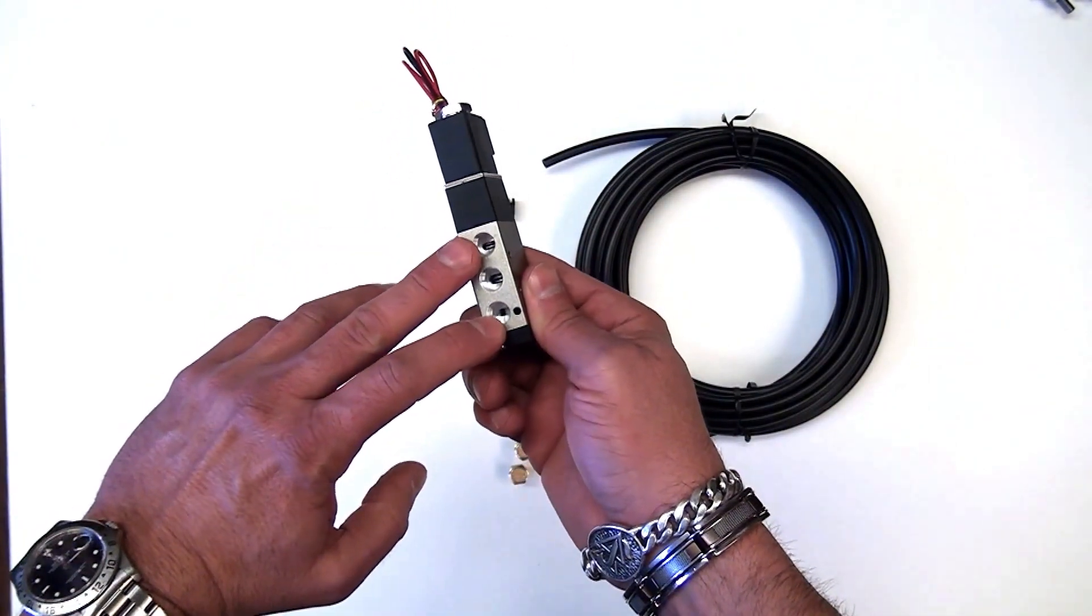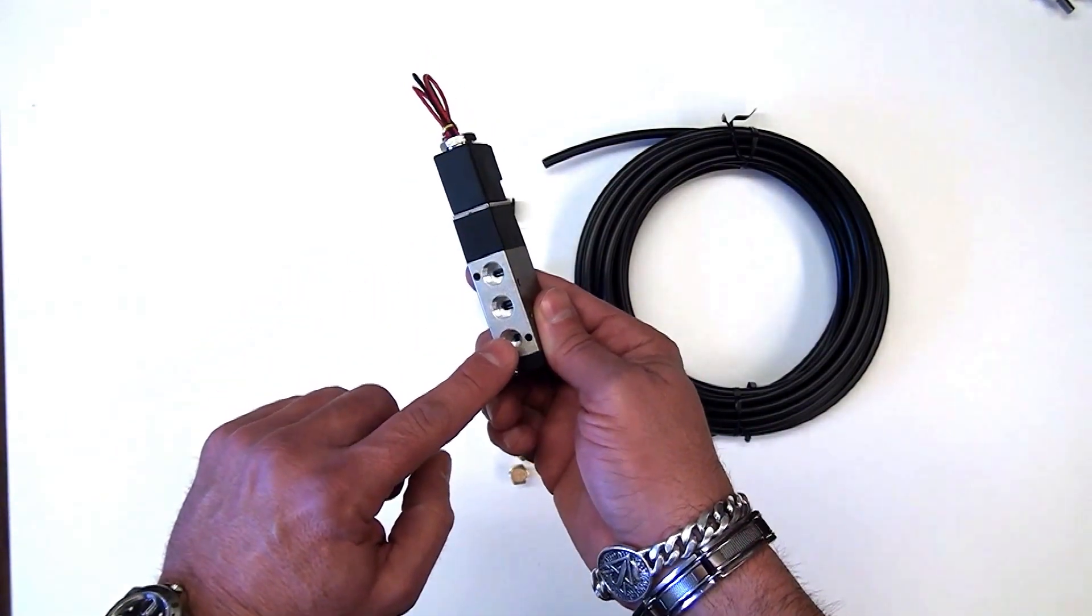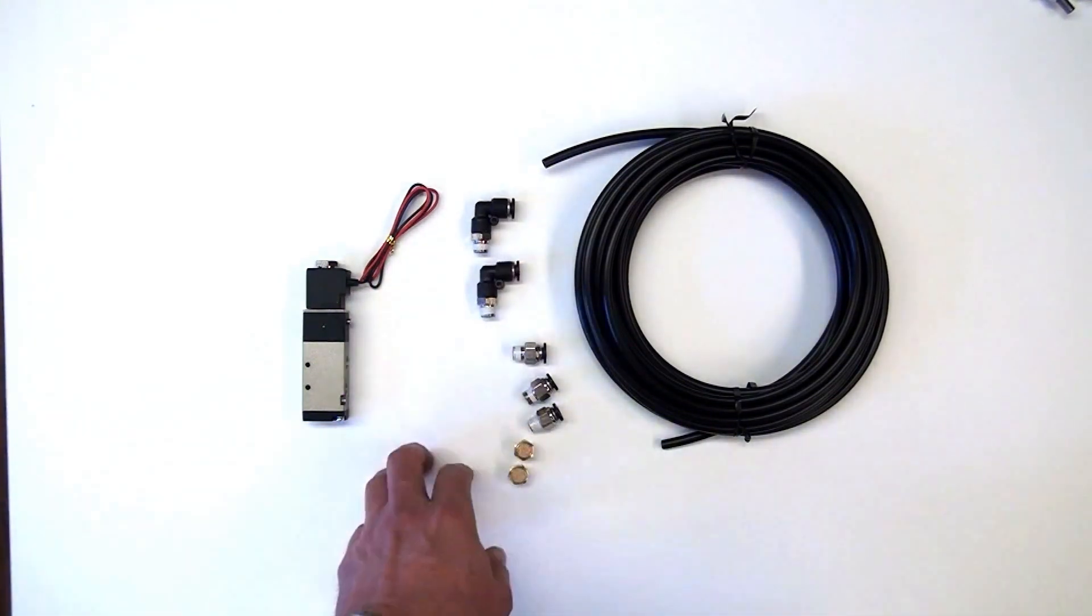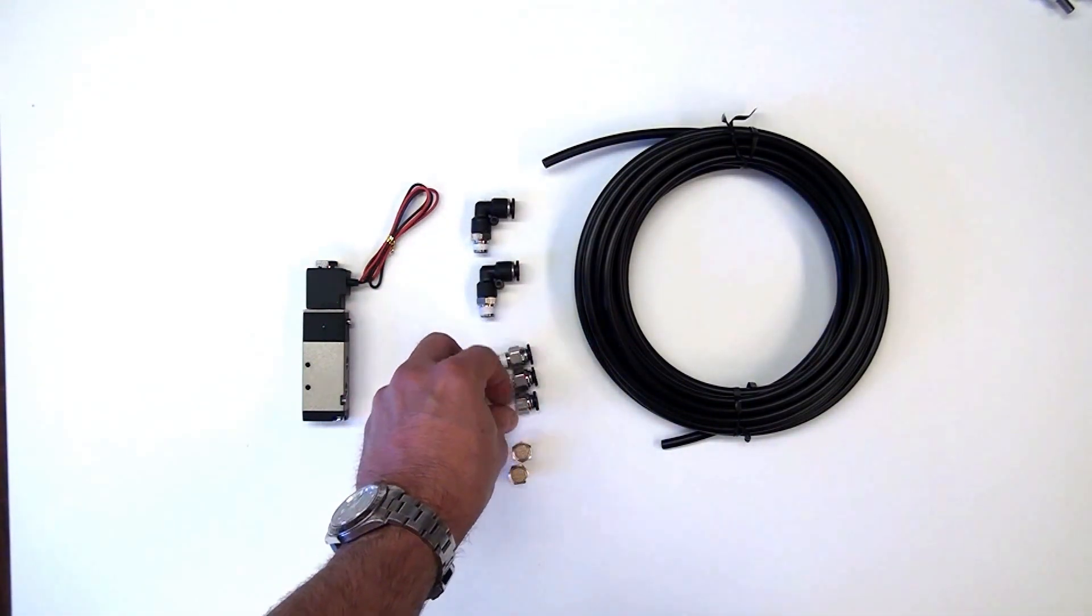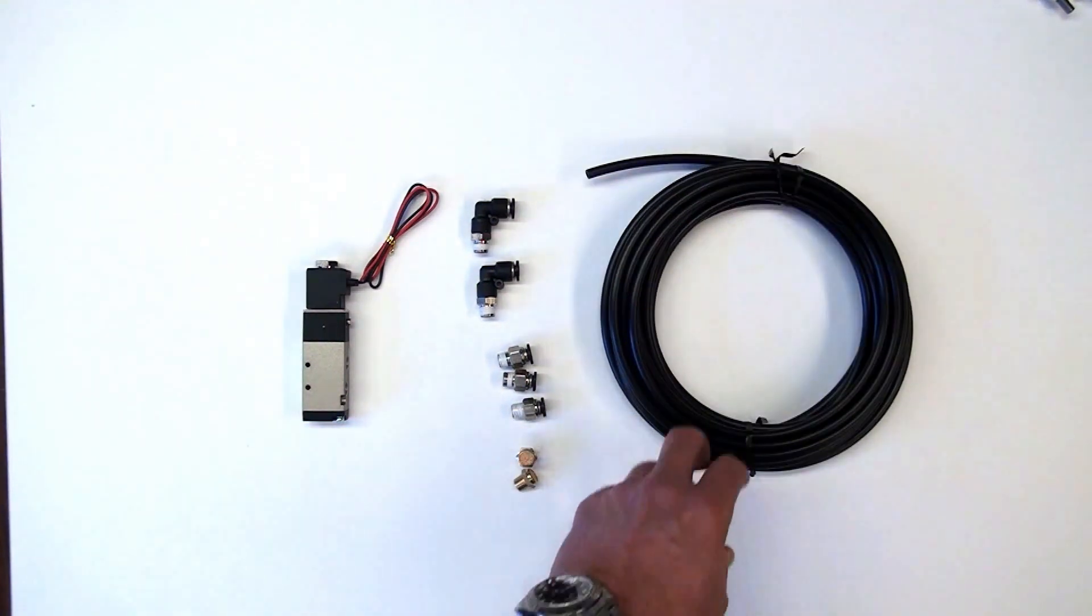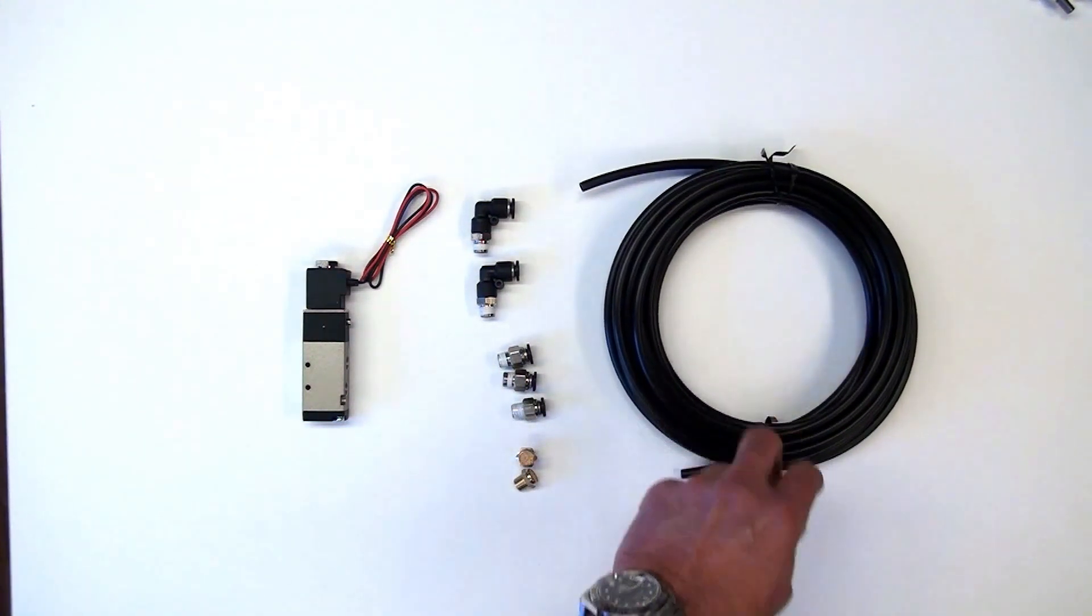Next to the air-in port are the two exhaust ports. The kit also comes with two elbow fittings with push-on, three male fittings with push-on, and two debris filters for the exhaust ports. It also comes with 20 feet of polyethylene air line.